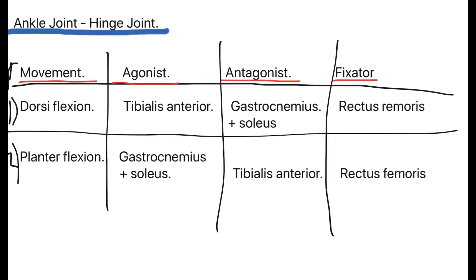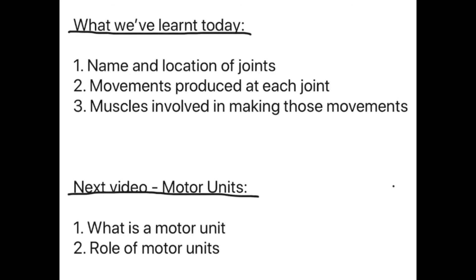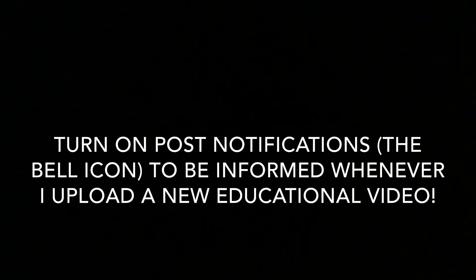Before I finish, a quick revision tip: go back over this video, draw out all the tables, make the notes, put them into flashcards, and just revise those flashcards. Trust me, it works — it may be tedious but it's the best way to learn this. To summarise what we have learned today: the name and location of joints, the movements produced at each joint, and the muscles involved in making those joints move. In the next video we move on to motor units — looking at what a motor unit actually is and the role of motor units in muscular contraction. Thank you everyone for watching, please subscribe if you haven't already, and I will see you in the next video.